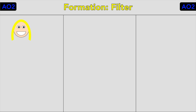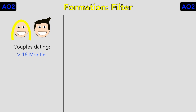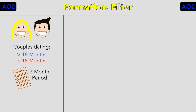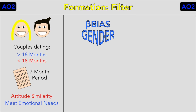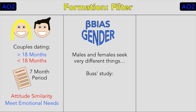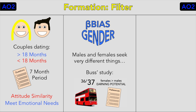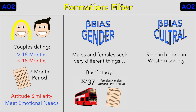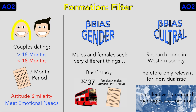One supporting study was a longitudinal study of student couples together for more or less than 18 months, who completed questionnaires over a seven-month period. It was found that attitude similarity was the most important factor up to 18 months; after this, psychological compatibility and the ability to meet each other's needs became important — supporting the filter theory. However, one criticism is beta gender bias, as it ignores gender differences; Buss's study of 37 cultures found males valued physical characteristics more while females valued earning potential. The theory is also criticised for beta cultural bias — most research is from Western society and may not apply to collectivist societies where arranged marriages are common.